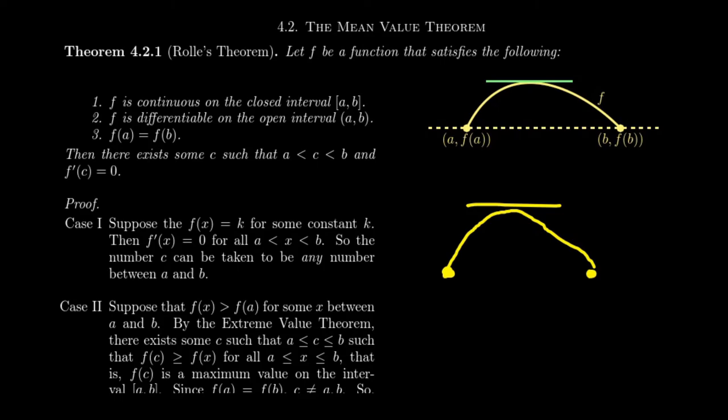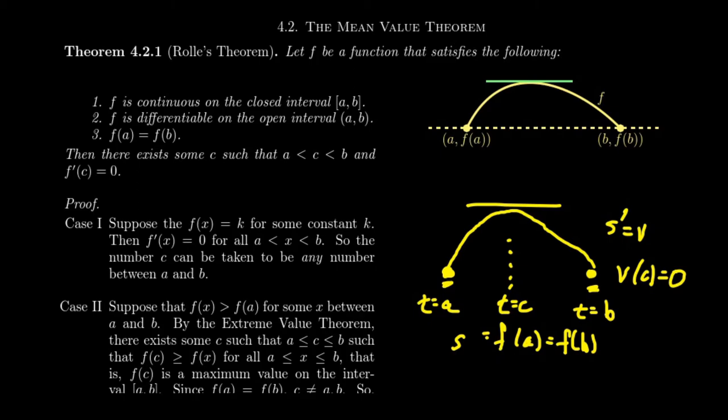You can think of this as f is the motion function, the position function of some particle that's moving. If ever there's a moment where the particle has the exact same position at different points of time, mind you, but if there's some point t equals a and t equals b, it has the exact same position function. That is f(a) equals f(b) here, where a and b are timestamps. Then Rolle's theorem says that there's some instance between the two at time equals c, such that f'(c) is equal to zero, which if this is our position function, the derivative of position is equal to velocity.